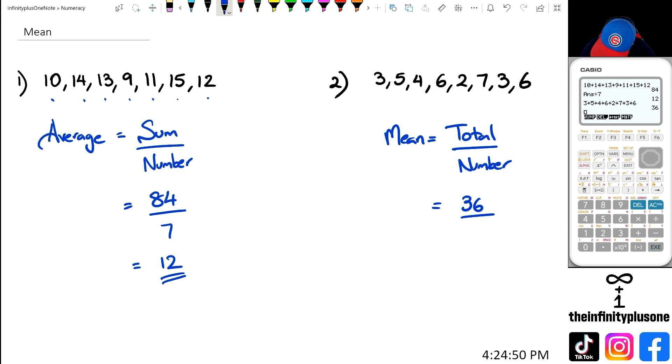So 36 divided by one, two, three, four, five, six, seven, eight numbers that we have. So we're going to do 36 divided by 8. And that is equal to 4.5. So the average in this particular case is 4.5.